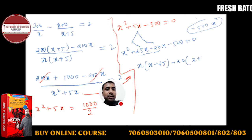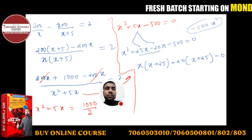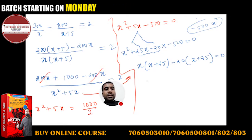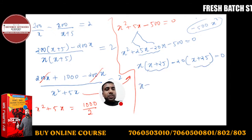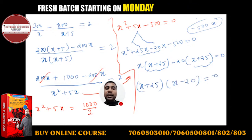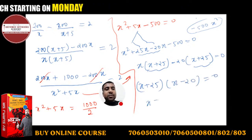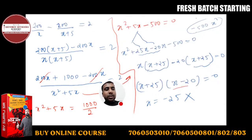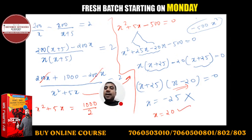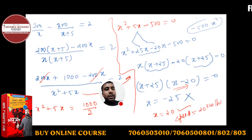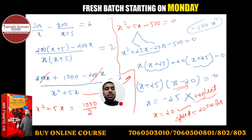Taking minus 20 common gives minus 20(x plus 25). So x plus 25 is the common bracket, giving (x plus 25)(x minus 20) equals 0. The two solutions are x equals minus 25, which is not possible since speed cannot be negative, and x equals 20. So the speed is 20 km per hour.